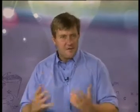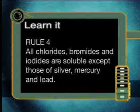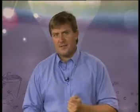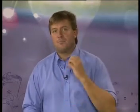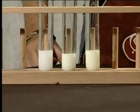Without these salts, they would suffer from serious muscle cramps. Now let's have a look at rule number 4: all chlorides, bromides and iodides are soluble except those of silver, mercury and lead. This rule predicts that silver chloride, silver bromide and silver iodide are insoluble.